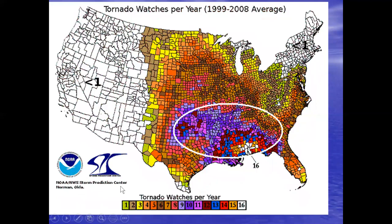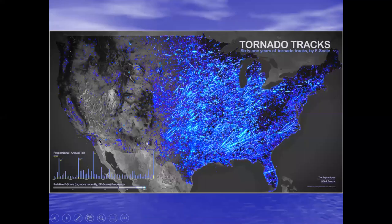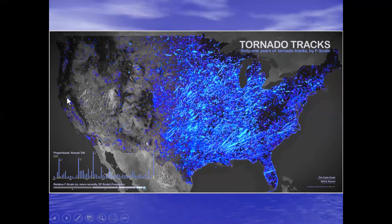This map shows tornado watches per year — conditions ripe for a tornado to occur. This region through here into north Florida is Dixie Alley. These are 61 years of tornado tracks; the brighter the color, the greater the Enhanced Fujita scale rating. We're not immune in the West — very few to none over the Great Basin — but tornadoes do happen here. They're infrequent because we don't have those distinct differences in air mass characteristics.